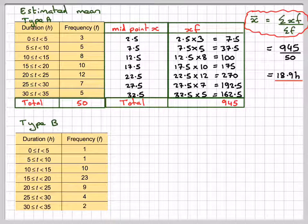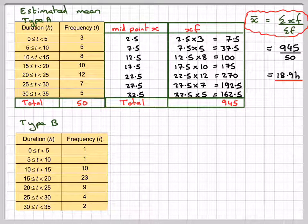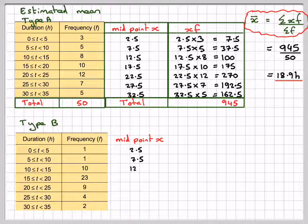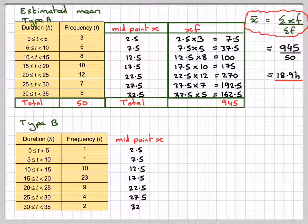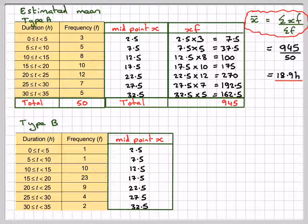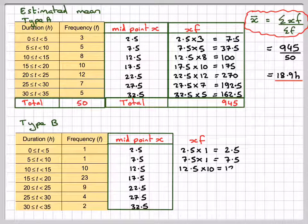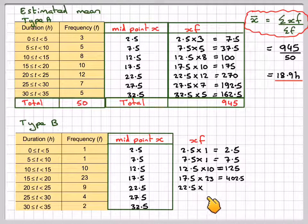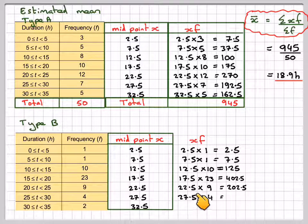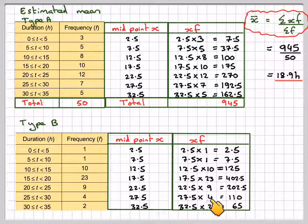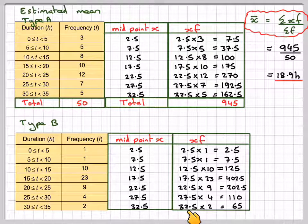For type B, doing exactly the same thing, taking the same midpoints. And then working X times F, so 2.5 times 1, 7.5 times 1, 12.5 times 10, 17.5 times 23, 22.5 times 9, 27.5 times 4, and 32.5 times 2.